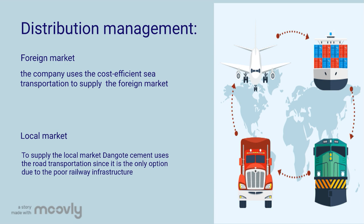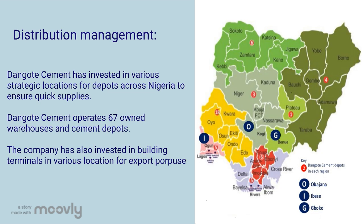For distribution management, the company uses cost-efficient sea transportation to supply the foreign market. For the local market, the company uses road transportation, since it is the only option due to poor railway infrastructure. Dangote Cement has also invested in various strategic depot locations across Nigeria to ensure quick supplies.